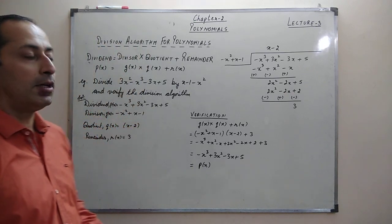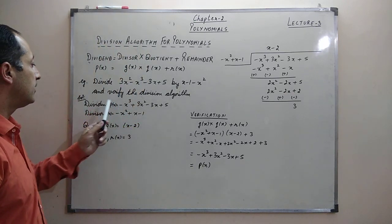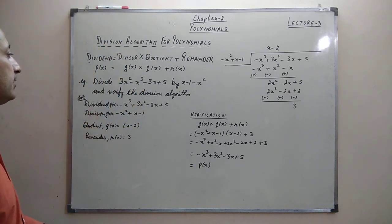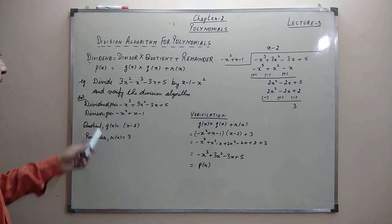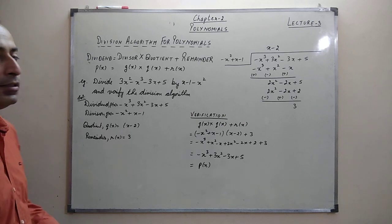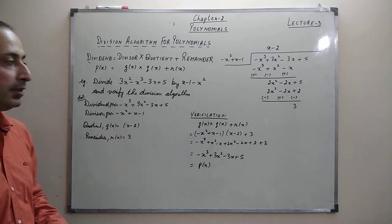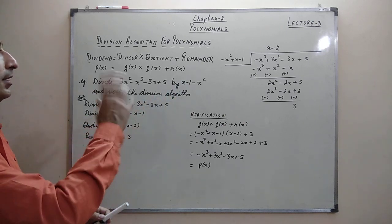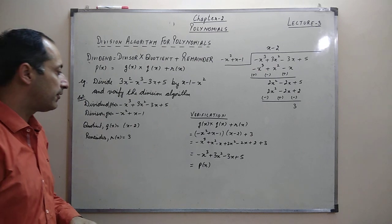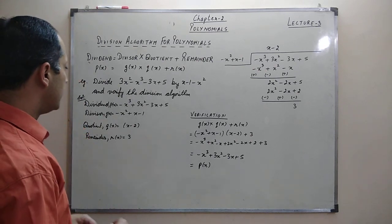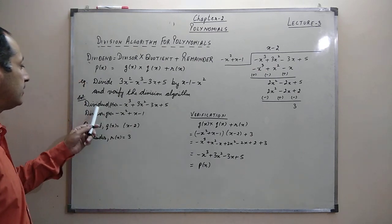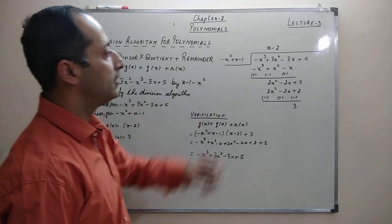So I write p(x) in standard form as -x³ + 3x² - 3x + 5, and the divisor is -x² + x - 1. I have just re-written them by rearranging the terms in standard form. Now I divide this dividend by the divisor.